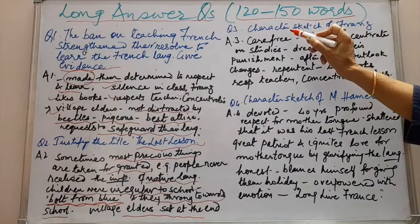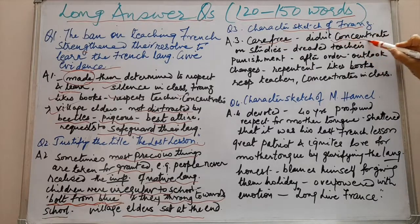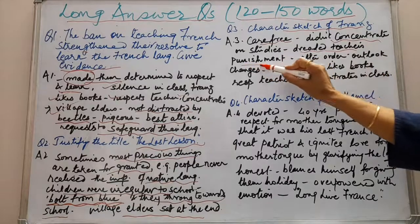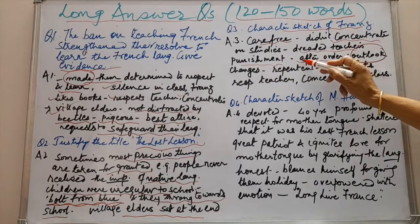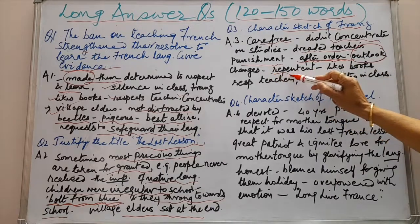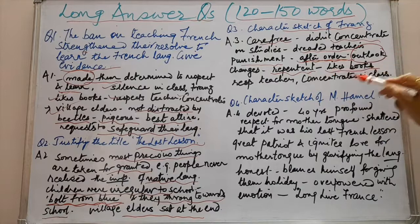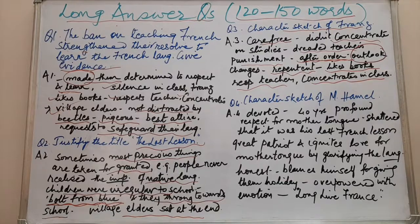Suppose you get a question to give a character sketch of Franz, who is a very important character. Franz is carefree — he did not concentrate on his studies, but he dreaded his teacher's punishment when he went unprepared to school. After the order from Berlin his outlook completely changes; he becomes repentant, which shows he has become wise. He starts liking his books, develops respect for his teacher, and concentrates in class. Overall, he realizes that nothing is impossible if one is determined to achieve it — wisdom dawns upon him in the end.